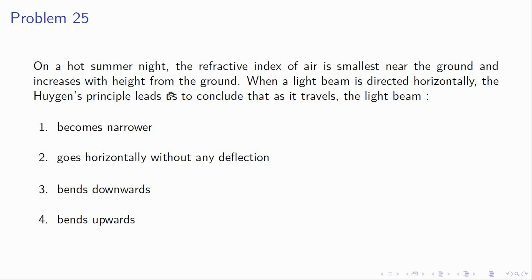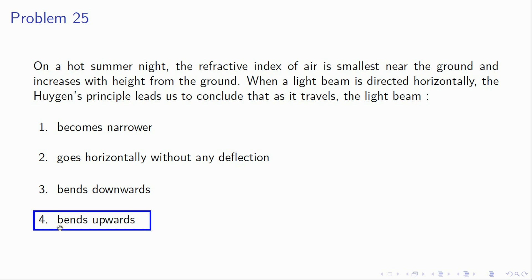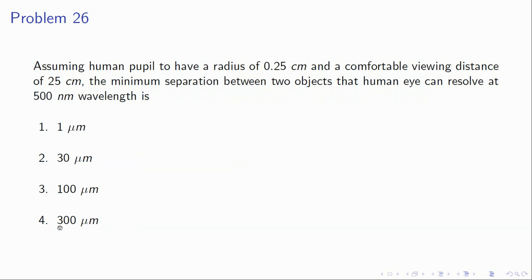Problem 25: on a hot summer night the refractive index of air is smallest near the ground and increases with height. A horizontal light beam — from Huygens's principle — will bend toward the region of higher refractive index, which is upward. Option 4 (beam bends upward) is correct.